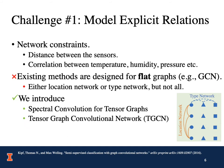There are two major challenges for modeling the co-evolving time series. The first one is how to model the explicit relationships, in other words, the network constraints. In the environmental monitoring setting, we have the location network and the type network. Existing methods are designed for flat graphs, for example GCN. They can either capture the location network or the type network, but not all. In this paper, we introduce spectral convolution for tensor graphs and the tensor graph convolutional network.